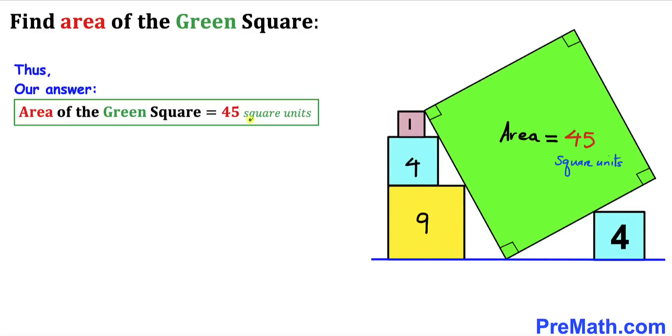So the area of the green square turns out to be 45 square units. Thanks for watching and please don't forget to subscribe to my channel for more exciting videos.